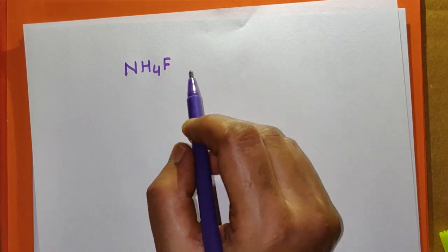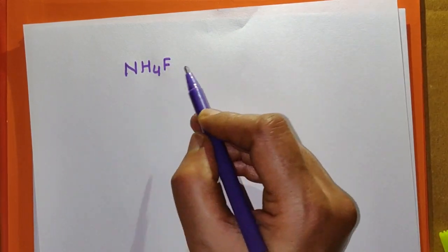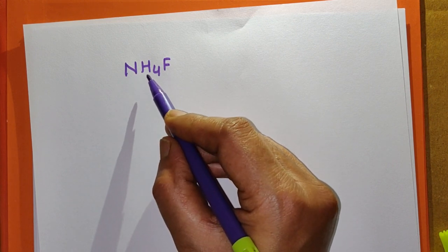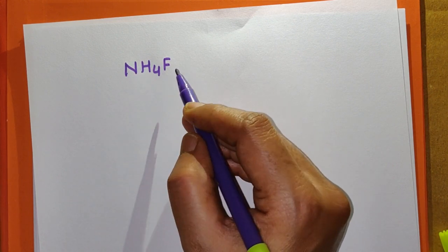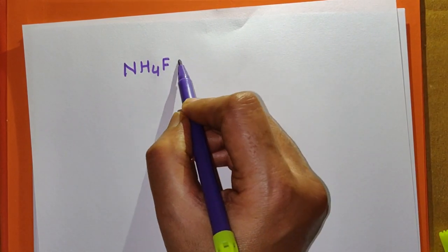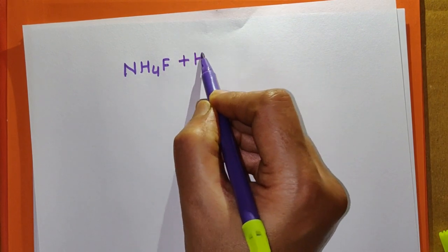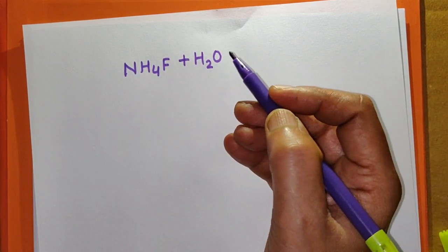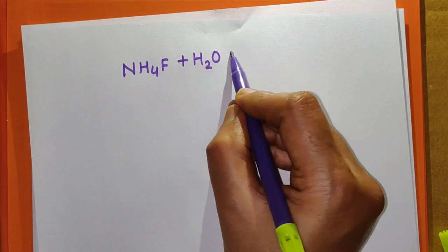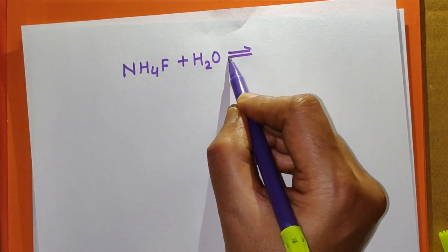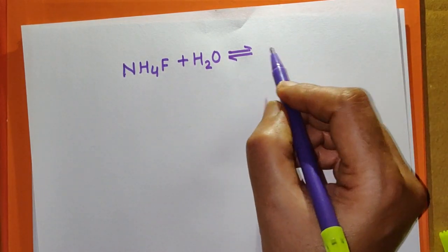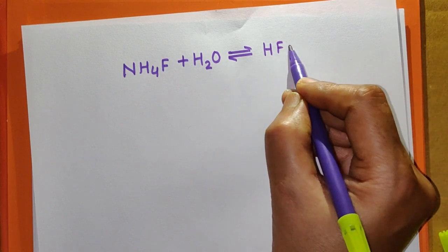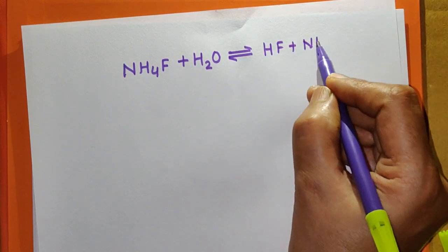Ammonium fluoride, NH₄F, is a salt of NH₄OH, which is a weak base, and HF, which is a weak acid. The hydrolysis reaction gives: NH₄F + H₂O → HF + NH₄OH.